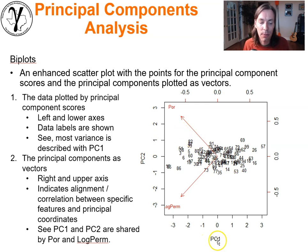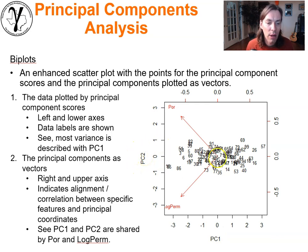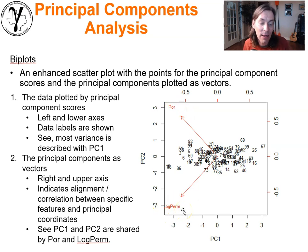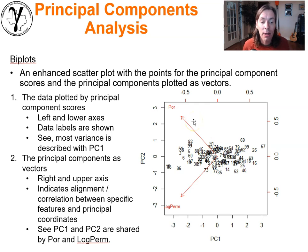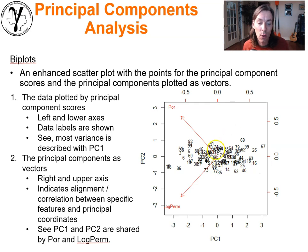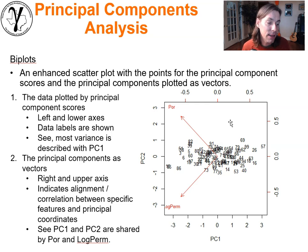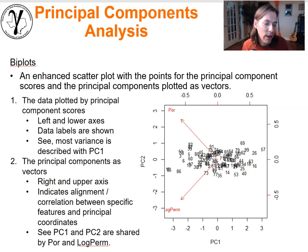Biplots are often used — showing principal component score one and two while also plotting the loadings for porosity and permeability. With many features, you'd see some clumped together going in the same direction, telling you that principal component one is dominated by those features, and others dominated by principal component two. Very powerful, though trivial when only working with two dimensions.